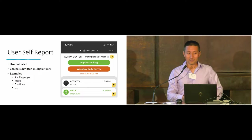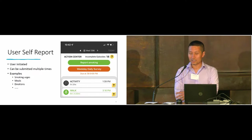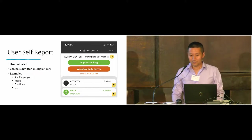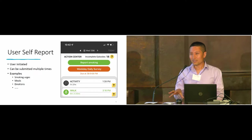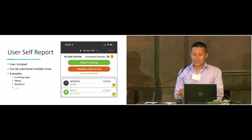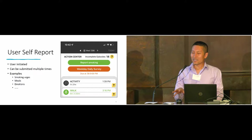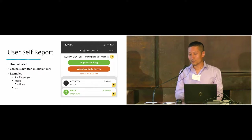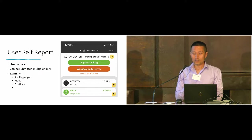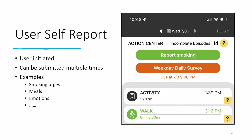Next is the user self-report feature. This feature is kind of like a specialized EMA survey, but the difference is it's not time-based—it's user-initiated. Users can initiate it any time and submit the survey multiple times. The EMA surveys from the previous slide can only be submitted once, so we feel this is also a very useful feature.